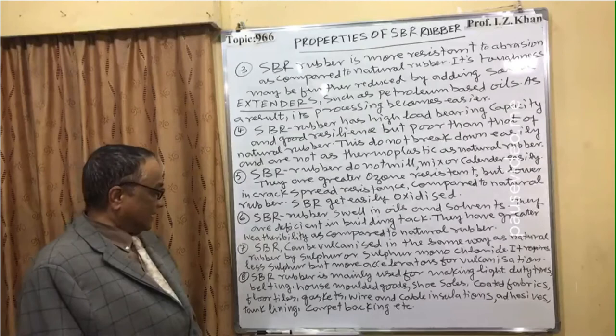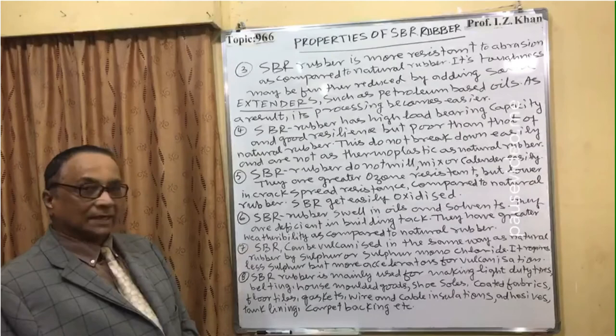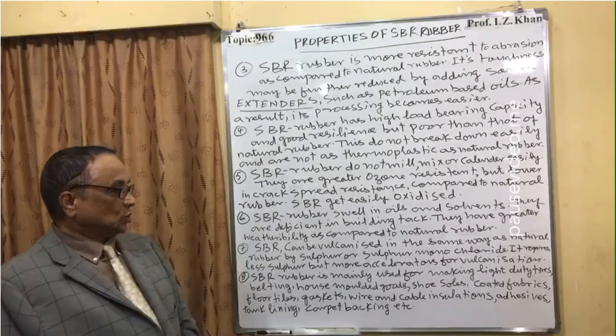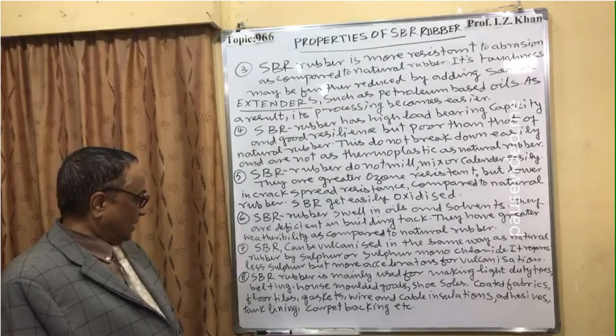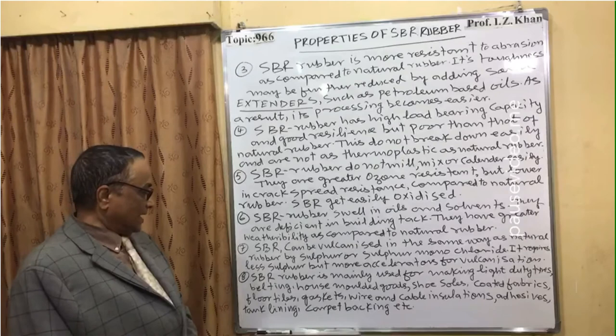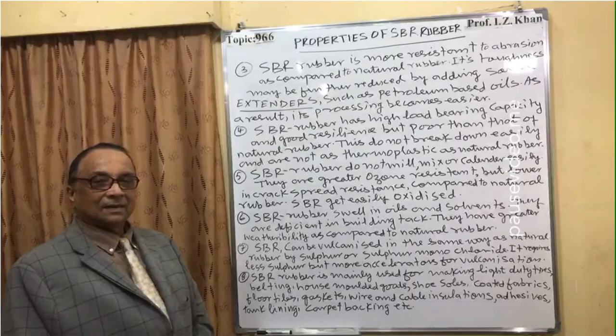Point eight: SBR rubber is mainly used for making light-duty tiles, belting, hose, molded goods, shoe soles, coated fabrics, floor tiles, gaskets, wire and cable insulation, adhesives, tank lining, and carpet backing, etc.